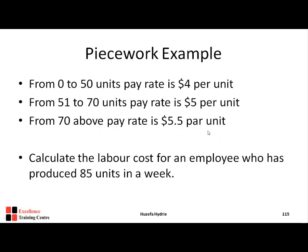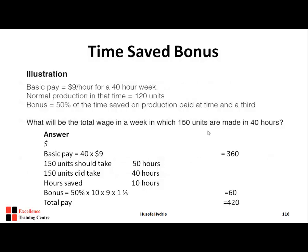Now let's discuss the time-saved bonus. Here is an illustration: basic pay is $9 per hour for a 40-hour week. The standard output is 120 units per week. The bonus is 50% of the time saved on production, paid at a rate of time and a third. We need to calculate the total wage in a week where 150 units are produced in 40 hours.